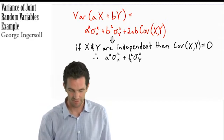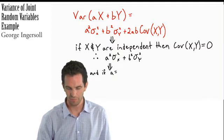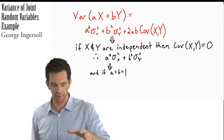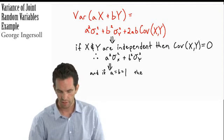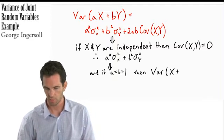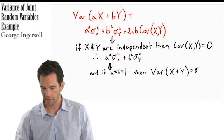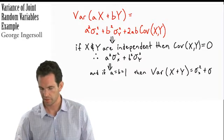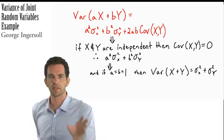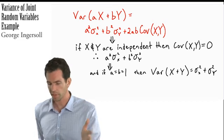In another circumstance, if a and b are both equal to one — meaning we've got a single quantity of the random variable x and a single quantity of y — then the variance of x plus y is equal to the variance of x plus the variance of y, if they're independent and we're dealing with a single quantity of each.